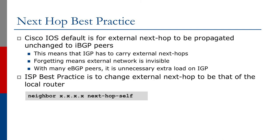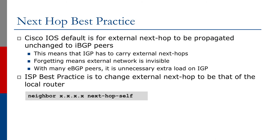Looking at next hop best practice: Cisco IOS default follows the BGP standard — the external next hop is propagated unchanged to iBGP peers, which means the IGP has to carry the external next hops. If we've got to carry all the external next hops for any sizeable network, that's an unnecessary burden on the IGP. IGP design is all about speed of convergence and keeping the number of prefixes to an absolute minimum. Adding all these external next hops into the IGP causes a serious scaling issue. If the external next hop is forgotten, the external network becomes invisible.